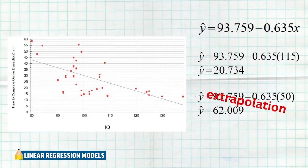Here's a specific example of a linear regression model. First, we see the scatter plot looking at the IQs of students and how long it took them to complete that online dissection. And we see our linear regression model, aka the line of best fit, going through the data. Now, here is the actual specific equation for our linear regression model. We see our y-intercept, that is going to be the 93.759. That's our a value.